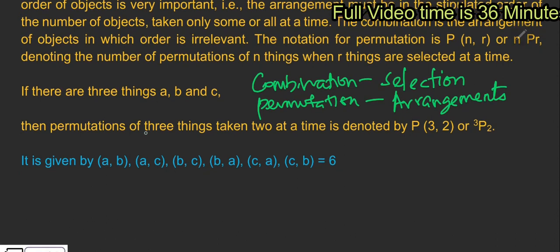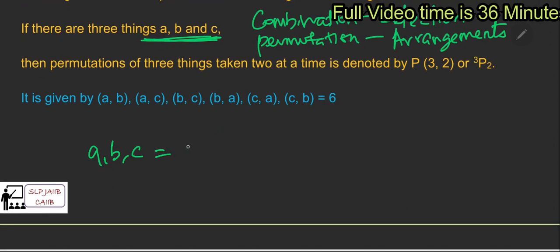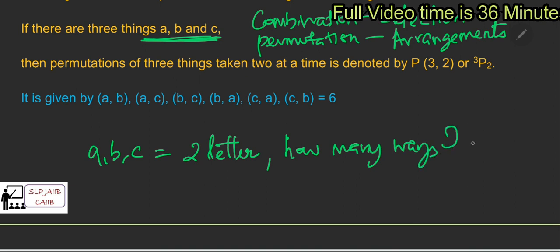Let's look at this example. There are three things: A, B, C. The permutation of three things taken two at a time is denoted as 3P2. In ABC, how many ways can you arrange two letters? Let's choose two letters from ABC and see in how many orders we can arrange them.